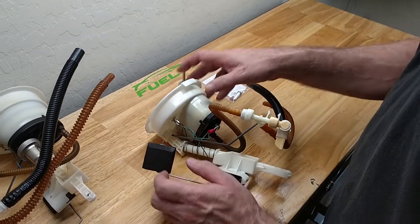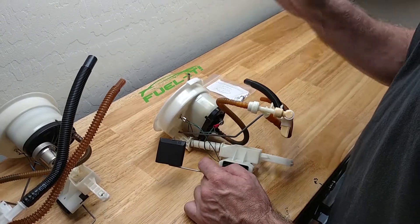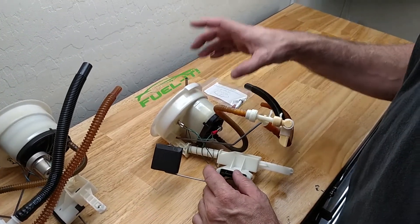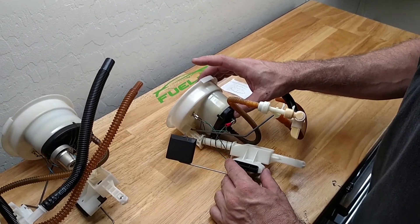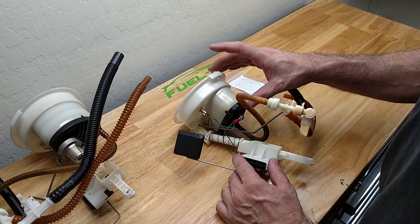And then after that, you'll go ahead and reinstall it and that completes the fuel pressure regulator delete for the Stage 3 with port injection and return line. Thanks for watching.